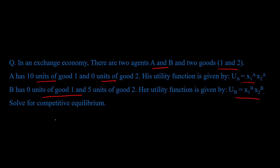Let's write down the endowments in terms of numbers. I'll denote A's endowment as wA: A has 10 units of good one and zero units of good two, so wA = (10, 0). Similarly, B has zero units of good one and five units of good two, so wB = (0, 5).